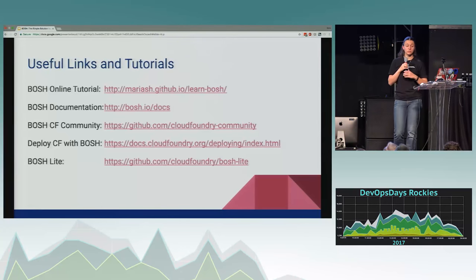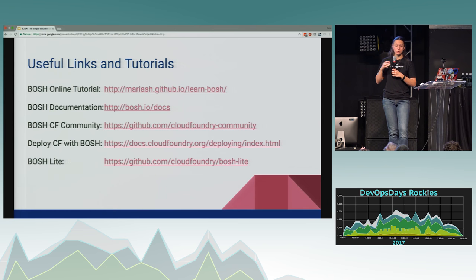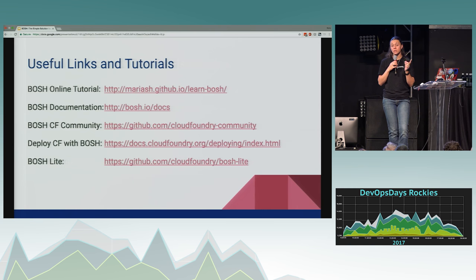Here's a list of useful links and tutorials. The top link is an online tutorial for BOSH. There's all the documentation, plus the CF community link. If you're interested in Cloud Foundry, there's a guide on how to deploy it with BOSH. And if you don't want to pay for an IaaS just to try it out, BOSH Lite lets you spin it up on your computer — though BOSH is kind of beefy, so if you only have four gigs of RAM, BOSH Lite is the way to go.